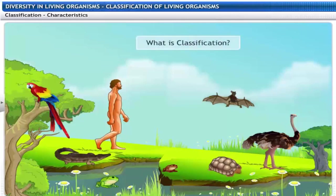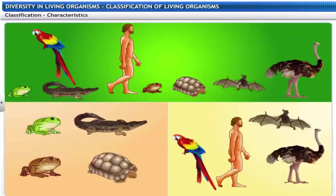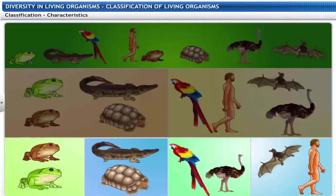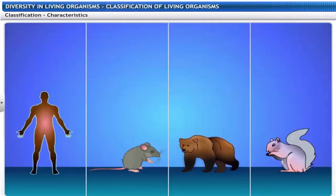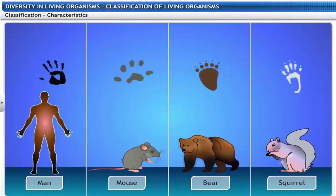What is classification? Classification is the division of living organisms on the basis of characteristics into groups and subgroups. A characteristic may be a particular form or function — for example, some animals have five fingers. This is a characteristic. The process of classification continues using a new characteristic each time.